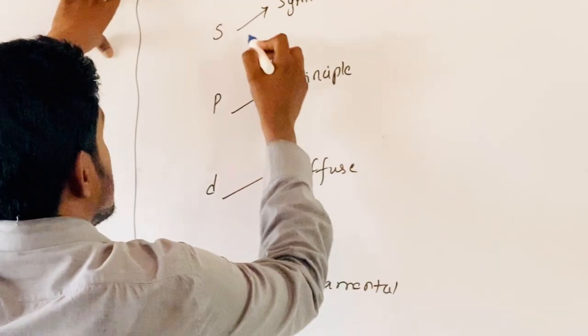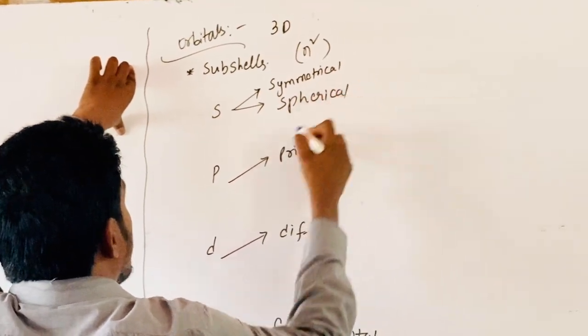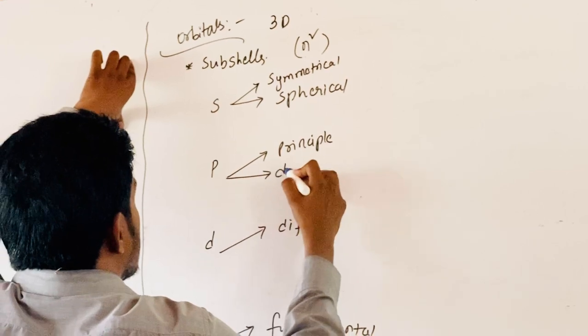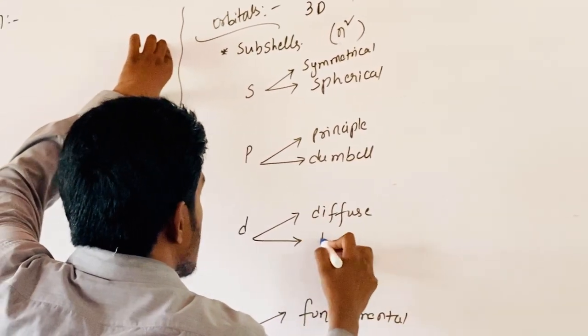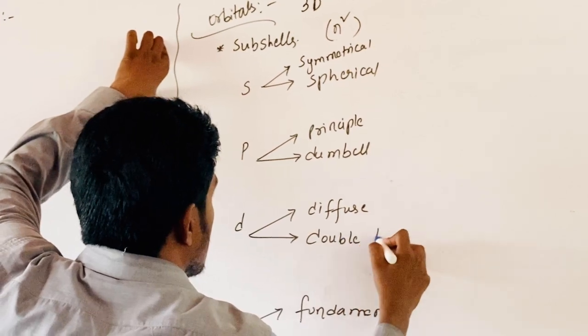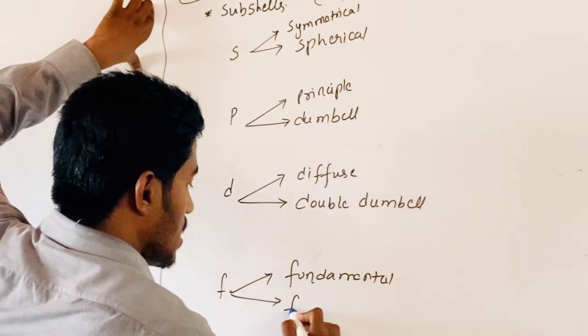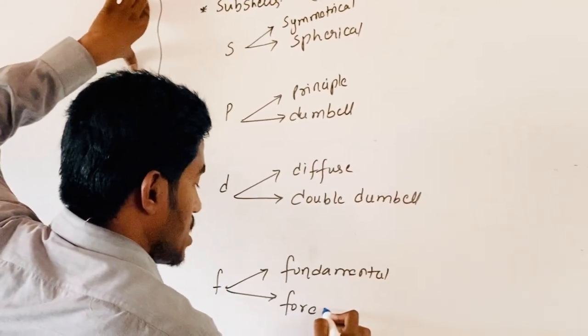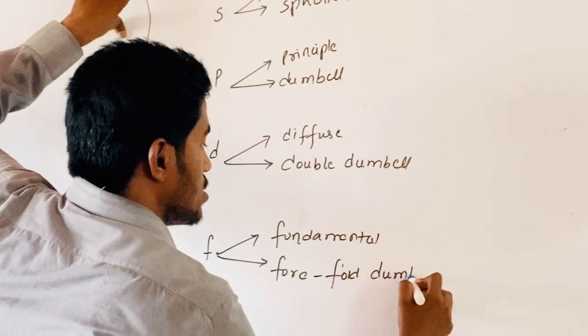Coming to the shapes. Shape of S-orbital is spherical. Shape of P-orbital is dumbbell. D-orbital shape is double-dumbbell or complex shape or imaginary shape.